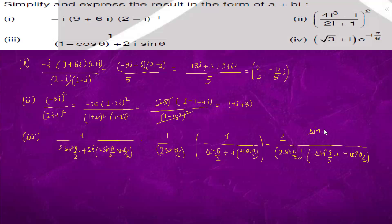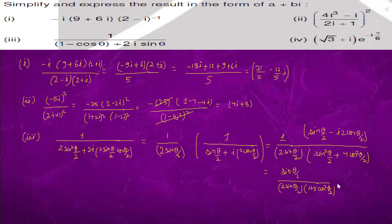The conjugate gives us sine theta by 2 minus iota times 2 cos theta by 2. So this can be written as sine theta by 2 upon 2 sine theta by 2, which simplifies to 1 plus 3 cos squared theta by 2, and we have minus iota times cos theta by 2 upon 1 plus 3 cos squared theta by 2. This is the real part a and this is the imaginary part b.